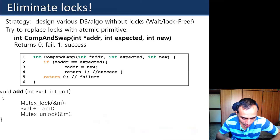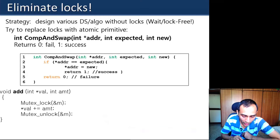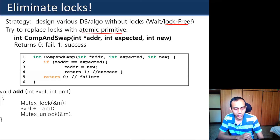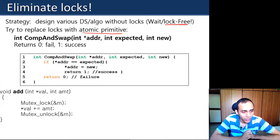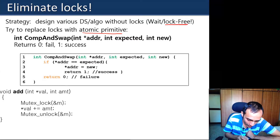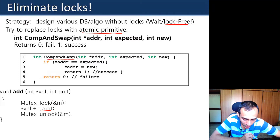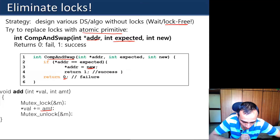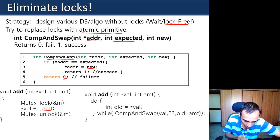The last approach discussed in the previous class is the most complex: building a lock-free data structure using hardware atomic primitives instead of locks. For basic operations on shared variables — increment with fetch-and-increment, swap with atomic exchange — these avoid locking entirely. For adding a value to a shared variable, we can use compare-and-swap (CAS), which checks whether the expected value is at an address and, if so, replaces it with a new value; otherwise it returns zero (failure).